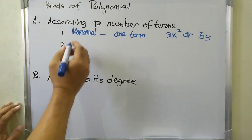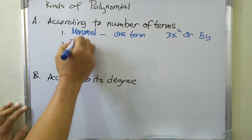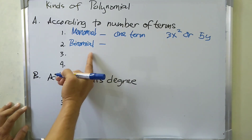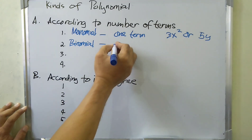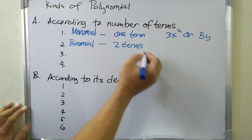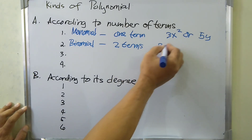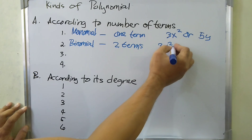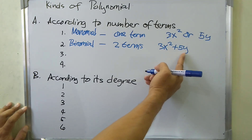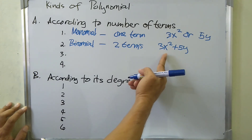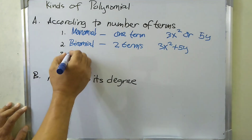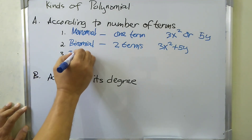The second one is binomial. A binomial is a kind of polynomial which has only two terms. For example, 3x squared plus 5y — there are two terms, as seen because of the plus symbol.